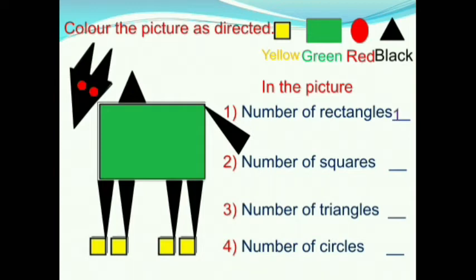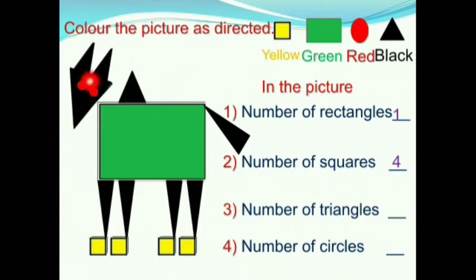Now count the number of squares: one, two, three, four — four squares, so we write four. Next, count the number of triangles: one, two, three, four, five, six, seven, eight, nine — nine triangles, so we write nine. Next, count the number of circles: one, two — two circles, so we write two.